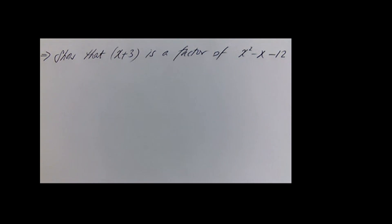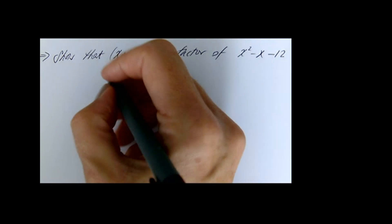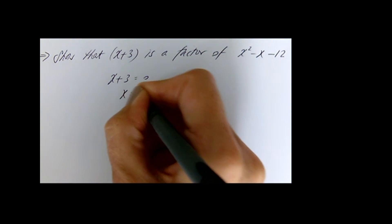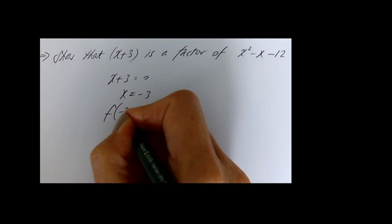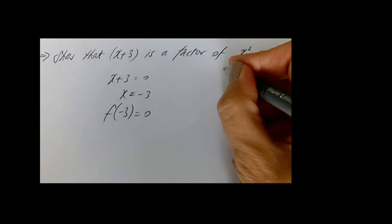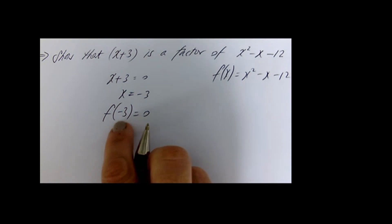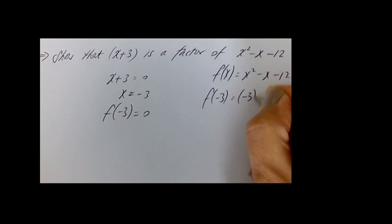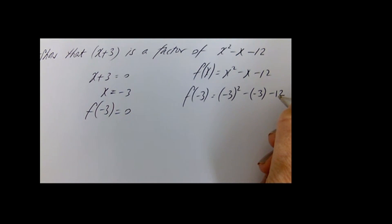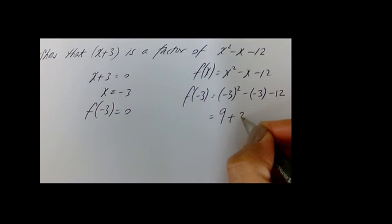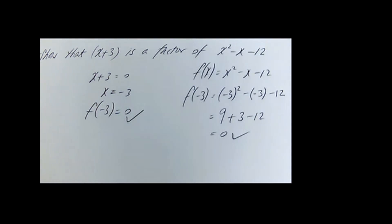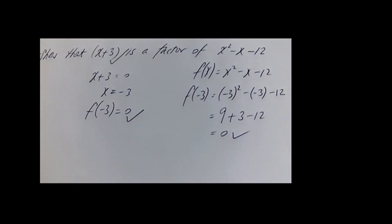To show that x plus 3 is a factor of x squared minus x minus 12: if x plus 3 is the factor, that means x equals minus 3 is the solution. So when you sub in minus 3 for x, the function should equal 0. Subbing in minus 3 gives 9 plus 3 minus 12, which is 0. Since f(minus 3) equals 0, x plus 3 is confirmed as the factor.